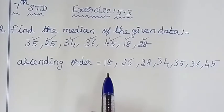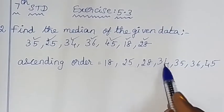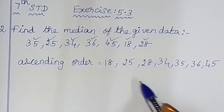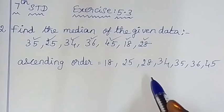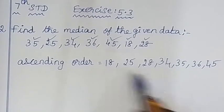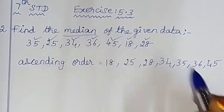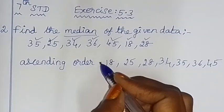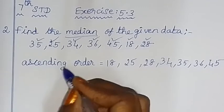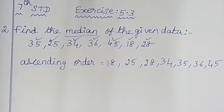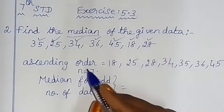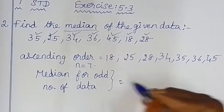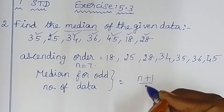We can see there are 7 numbers, which is an odd count. So we need to find the middle number — the median. We have a formula: for an odd number of data, Median = ((N+1)/2)th term.